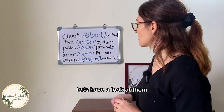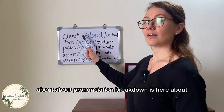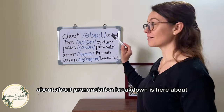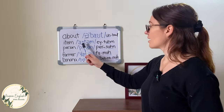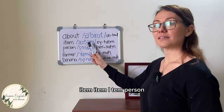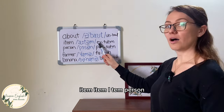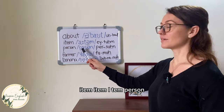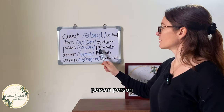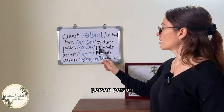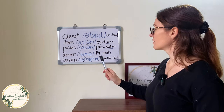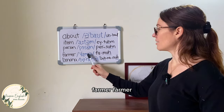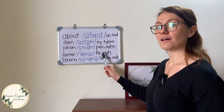All these words have the schwa sound when spoken, and mastering this sound is crucial. It will help to enhance your English pronunciation, making you sound more natural, relaxed, and fluent like a native English speaker. Let's have a look at them: 'about' [uh-bout], 'item', 'person', 'farmer', 'banana' — and banana actually has two schwa sounds: b-nuh-nuh.